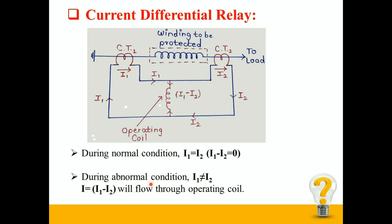But during the abnormal condition I1 is not equal to I2. Therefore current equal to I1 minus I2 will flow through the operating coil, which will energize the relay and send a trip signal to circuit breaker to protect the winding.